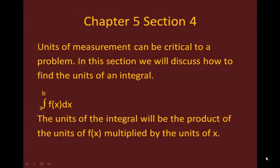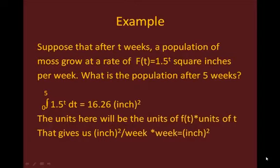Once you do a couple of these, they're quite straightforward. Let's look at an example. Suppose that after t weeks, a population of moss grows at a rate of f(t) equals 1.5 to the t square inches per week. What is the population after 5 weeks?